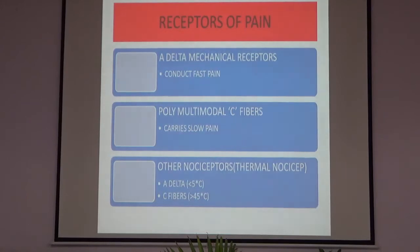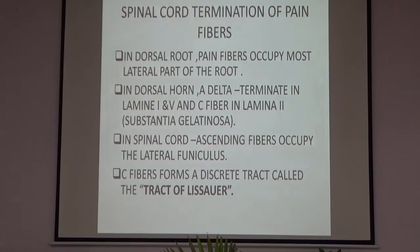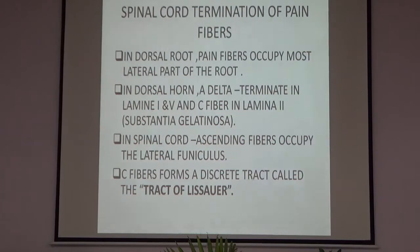A-delta fibers carry pain when the temperature is less than 5 degrees Celsius, while C fibers carry pain when the temperature is more than 45 degrees Celsius. Coming to the spinal cord termination of pain fibers: in the dorsal root, pain fibers occupy the most lateral part. In the dorsal horn, A-delta terminates in laminae 1 and 5, while C fibers terminate in laminae 2, also called the substantia gelatinosa. Ascending fibers in the spinal cord occupy the lateral funiculus, and C fibers form a discrete tract called the tract of Lissauer.